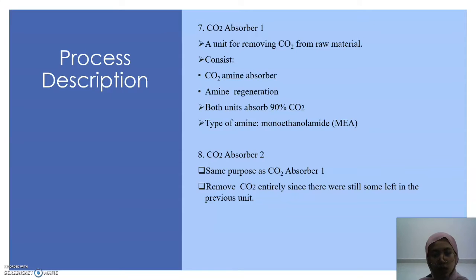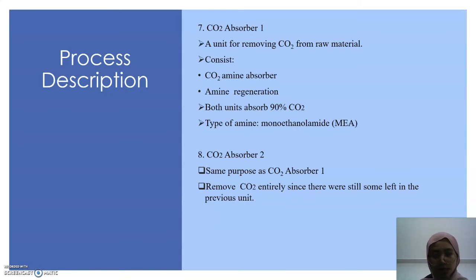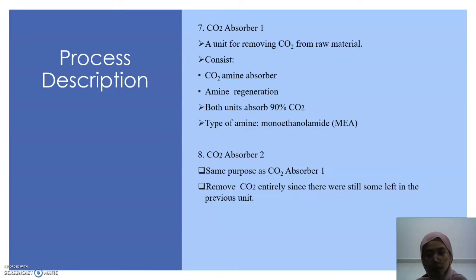Next, there are 2 CO2 absorbers. The first CO2 absorber removes carbon dioxide from the raw material stream. It consists of 2 units: a CO2 amine absorber and an amine regenerator, and both units absorb 90% of the carbon dioxide. The type of amine used is monoethanolamine, which is MEA. The same applies to CO2 absorber 2, which has the same purpose and removes the remaining carbon dioxide left from the previous absorber.